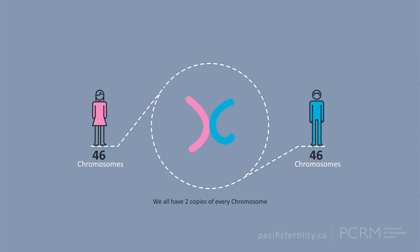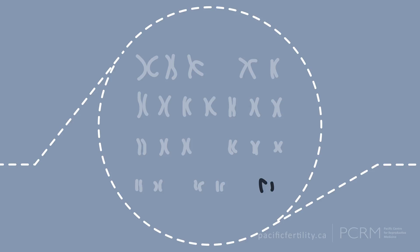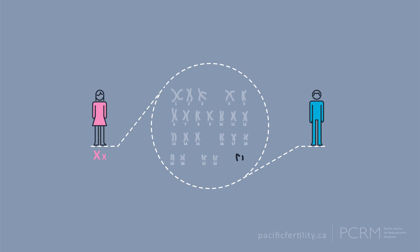We all have two copies of every chromosome — one copy from the egg and one from the sperm. The first 22 pairs of chromosomes are numbered 1 through 22 based on size. The 23rd pair are sex chromosomes: XX for female or XY for male.